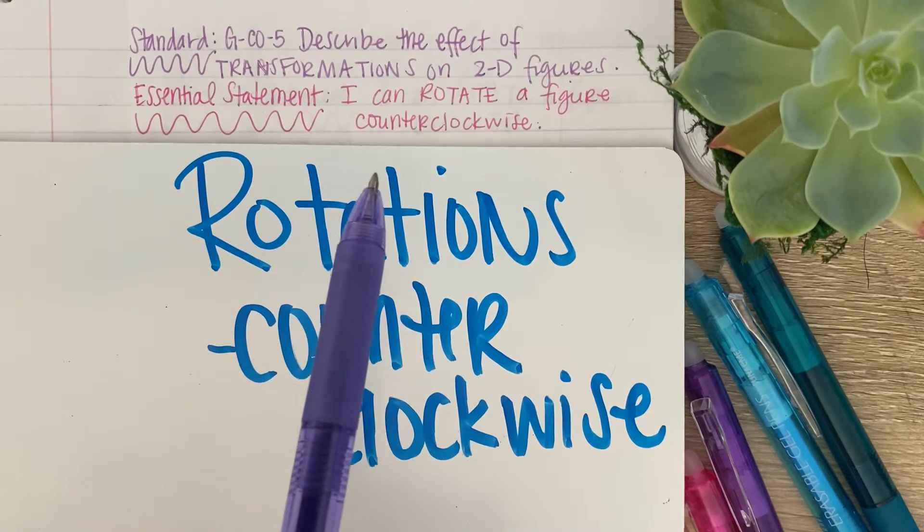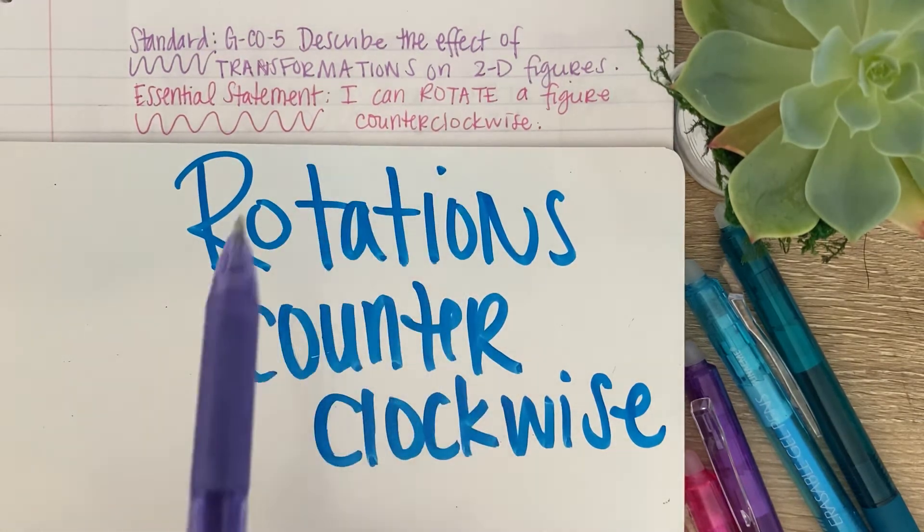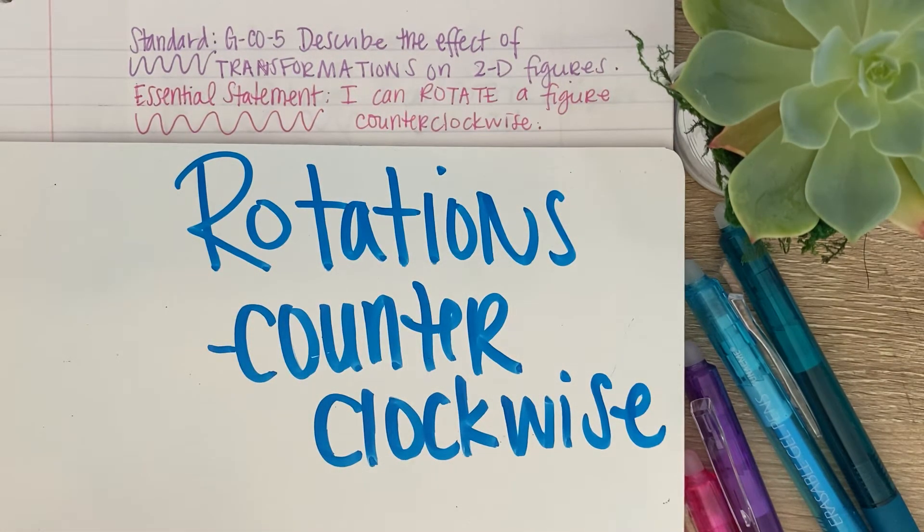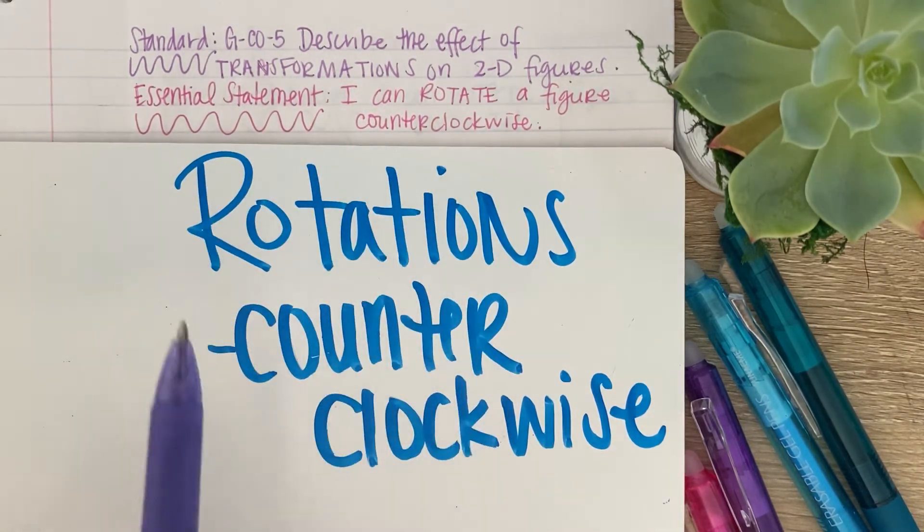Now, counterclockwise is going the opposite way in a clock: 12, 9, 6, 3, this way. This is counterclockwise. So we will be moving counterclockwise this way, if you look at my pen, this way today.